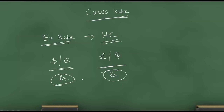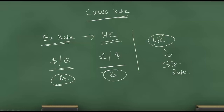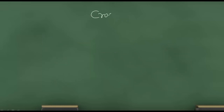Whereas the exchange rate which involves your home currency is called a straight rate. So cross rate is different from the concept of cross multiplication which is used in exchange rates.